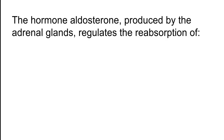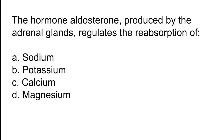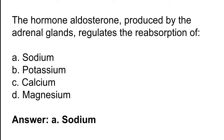The hormone aldosterone, produced by the adrenal glands, regulates the absorption of which substance? Options: A) Sodium, B) Potassium, C) Calcium, D) Magnesium. The correct answer is option A. The hormone aldosterone produced by the adrenal glands regulates the absorption of sodium.